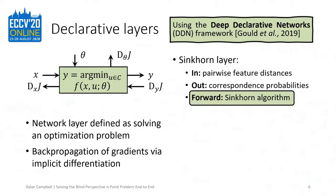To compute the correspondence probability matrix from the pairwise feature distance matrix, we use the efficient Sinkhorn algorithm. Solving an optimal transport problem allows the network to perform global search for the best joint correspondence probabilities, resolving ambiguities and approaching a one-to-one correspondence matrix as desired. The benefits of enclosing this algorithm in a declarative layer include being able to run the algorithm to convergence rather than fixing the number of iterations, and obviating the need for unrolling the algorithmic steps and maintaining the requisite computation graph, which saves a significant amount of memory.